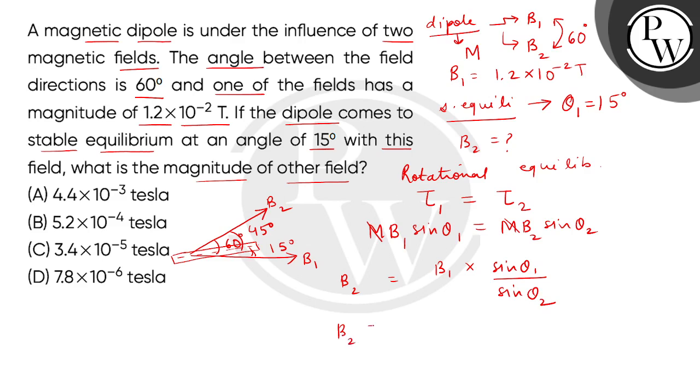We can write B2 = 1.2 × 10^-2 × sin(15°)/sin(45°). This gives us B2 = 4.39 × 10^-3 tesla. The correct option is option A.